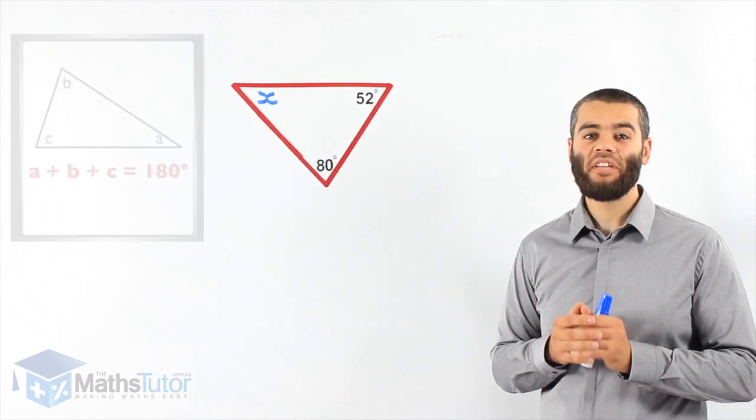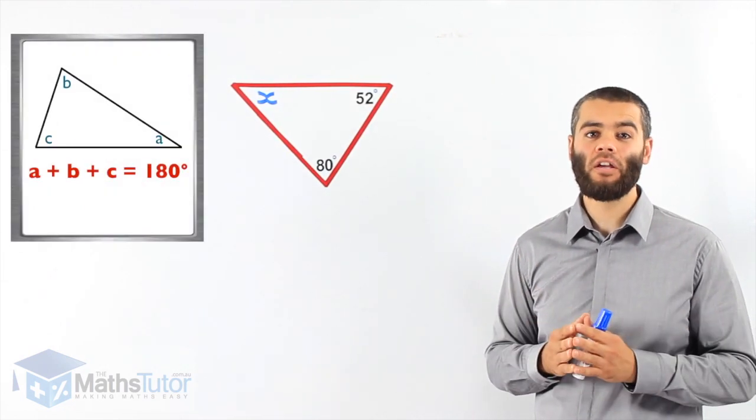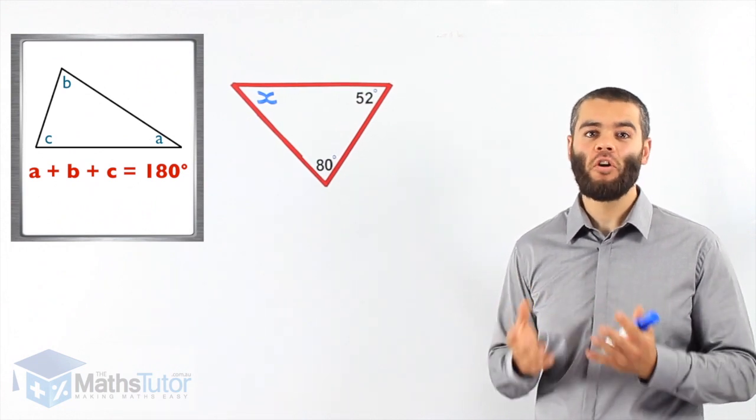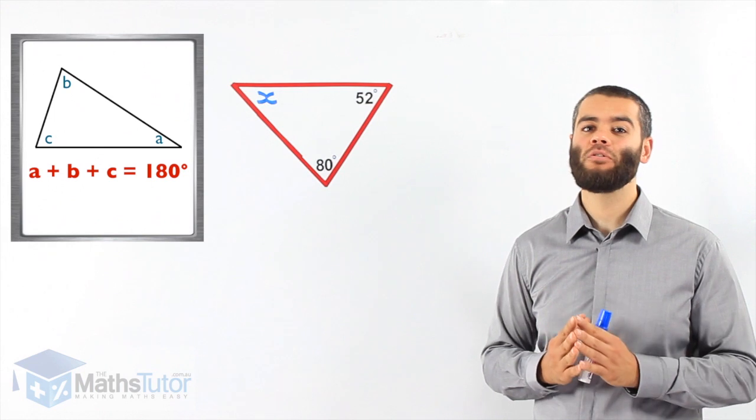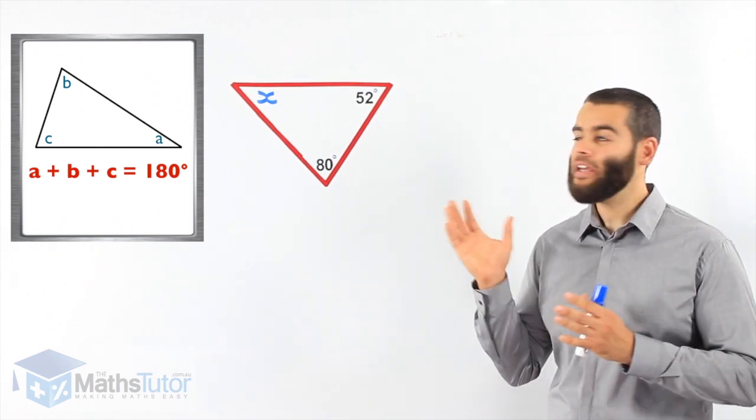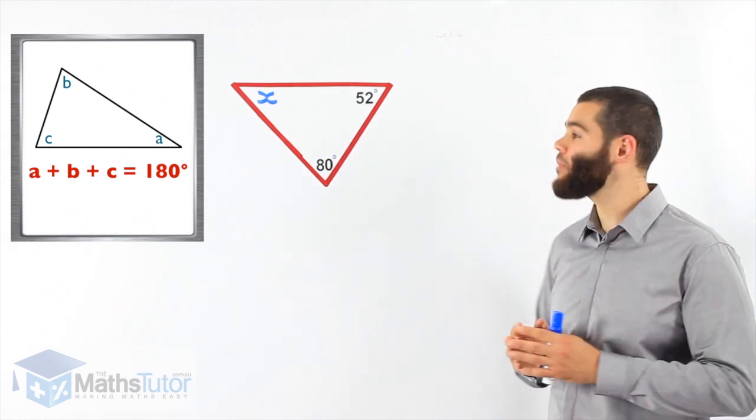Let's do that now. We said we can actually find a missing angle in a triangle using the rule that we just learned, which is all angles in a triangle add up to 180 degrees.